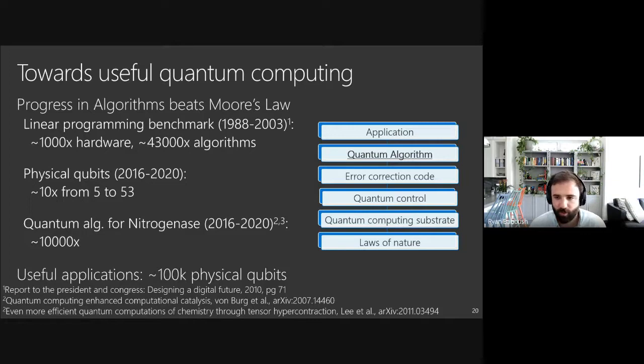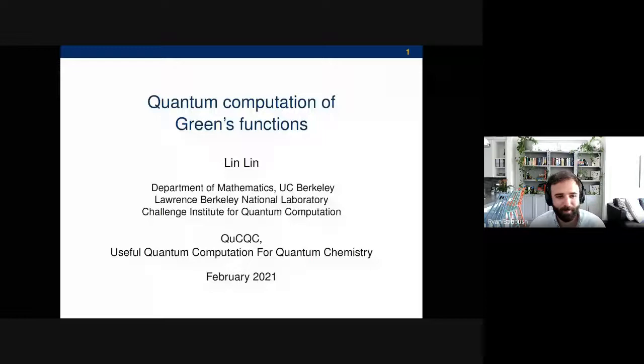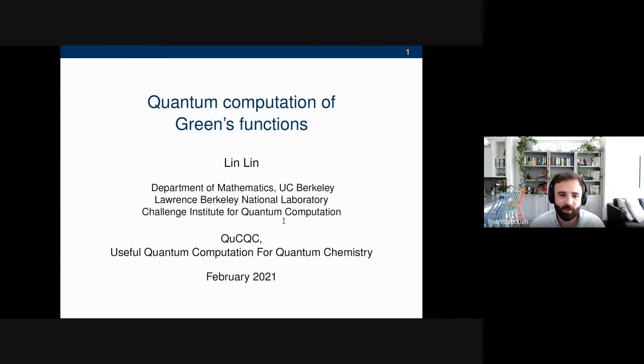So for the next talk, we have Lin Lin, who is a professor of applied math at Berkeley. Lin Lin's been working in the analysis and methods for quantum chemistry for many years and more recently has been doing a lot of work in quantum algorithms as well. He's had a lot of success showing some impressive algorithms in a number of cases. Today he's going to tell us about quantum computation of Green's functions.